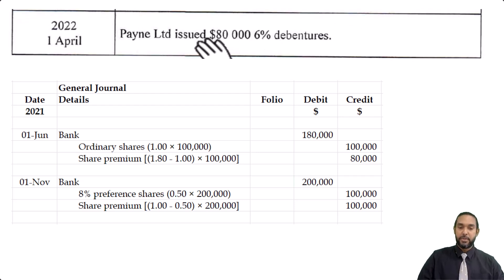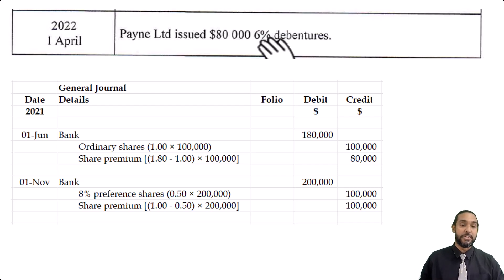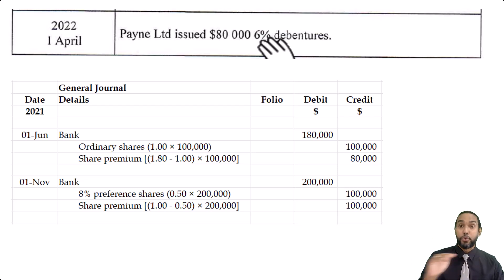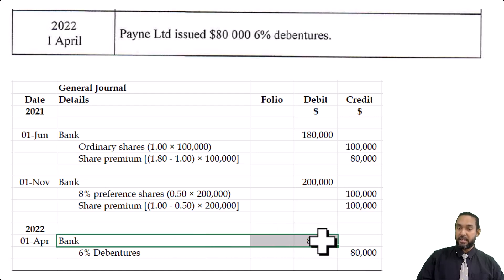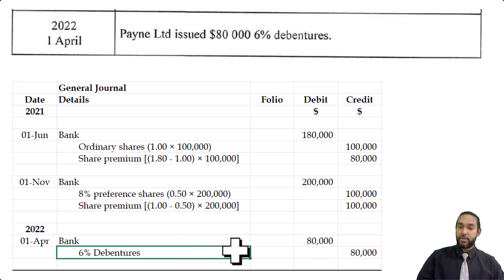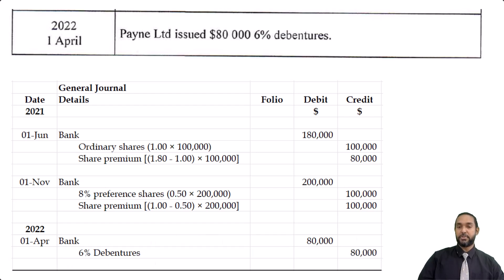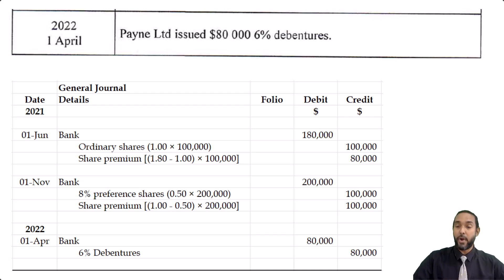For the debentures, there is no complex calculation. The 6% is the interest rate on the debentures and, just like the 8% for the preference shares, it forms no part of the calculation when you issue debentures. All we do is debit bank for $80,000 and credit 6% debentures for $80,000. The debit entry comes first and the credit entry is shown second and indented. That's how all three journal entries look, and as stated, no narratives are required.